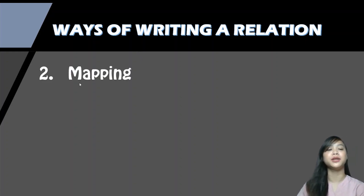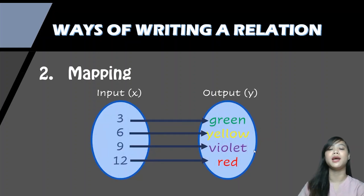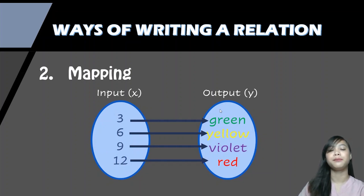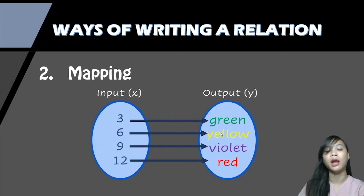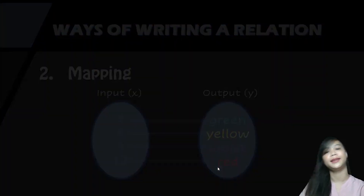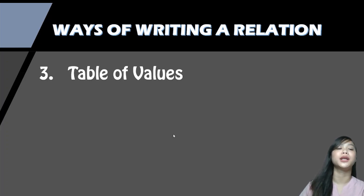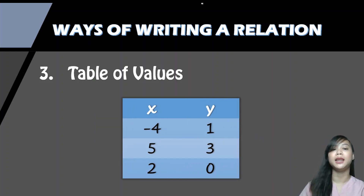Another way of writing a relation is a mapping. We draw two circles or ovals — one for the input and one for the output. The inputs are your x values and the outputs are your y values. An arrow means that a value is related to another: 3 is related to green, 6 to yellow, 9 to violet, and 12 to red. Another way is the table of values, which shows the set of x and set of y, as seen in the earlier example.